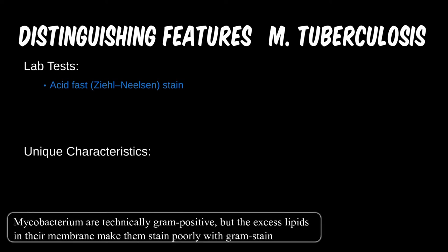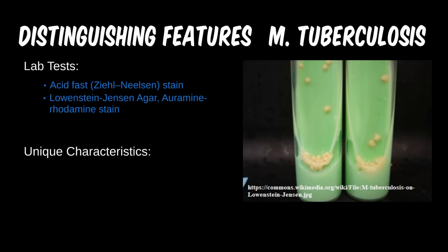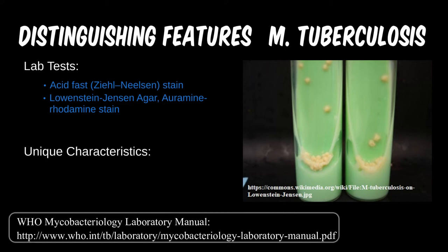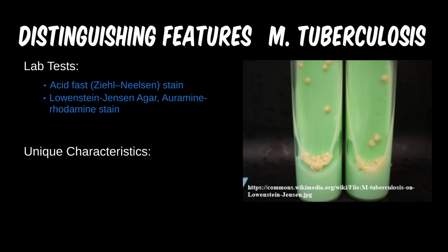There is also a way to culture mycobacterium with the Lowenstein-Jensen agar. However, even when successful, this culture can take weeks — you wouldn't want to release an infected individual to spread TB for weeks to months while awaiting test results. It is also possible to visualize the microbe with a fluorescent auramine-rhodamine stain, which is said to be more sensitive than acid-fast stains, but acid-fast is still used to confirm and is seen much more commonly on test questions.